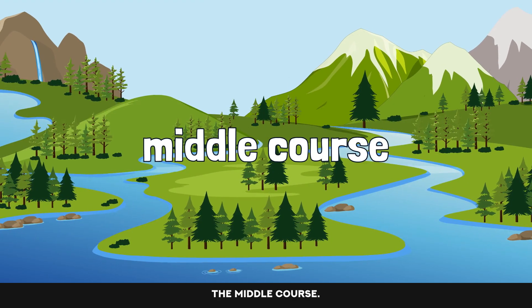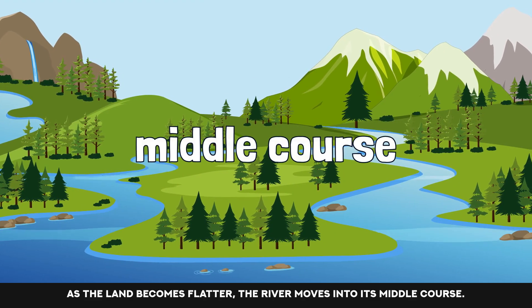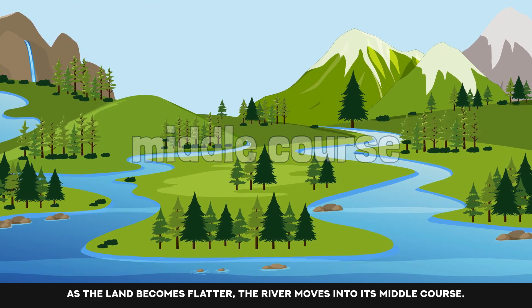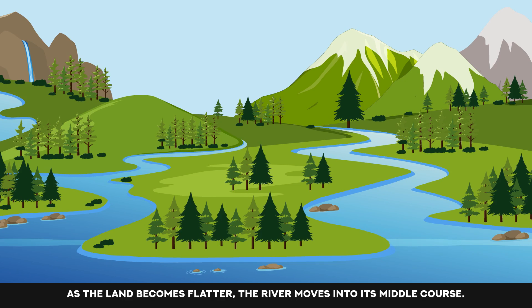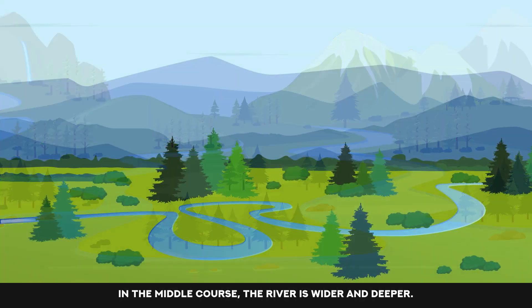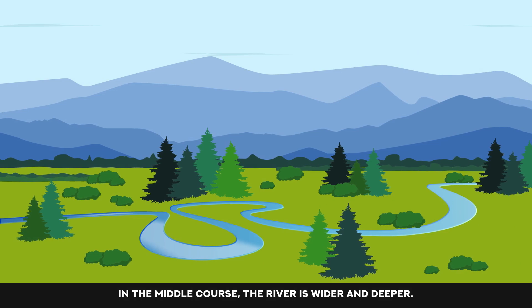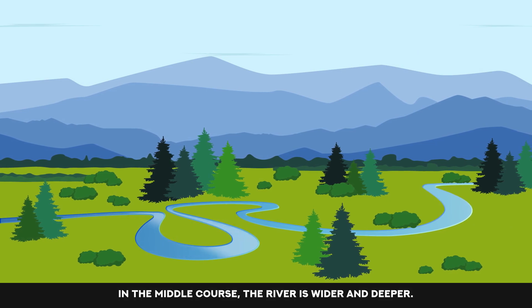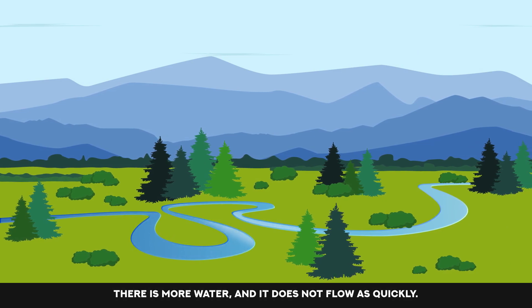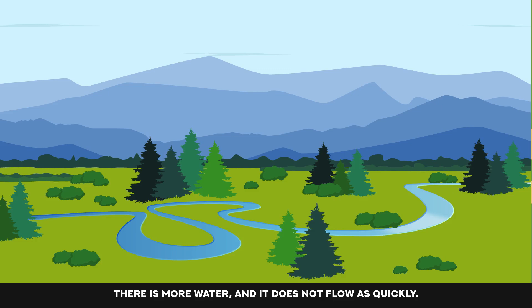The middle course. As the land becomes flatter, the river moves into its middle course. In the middle course, the river is wider and deeper. There is more water and it does not flow as quickly.